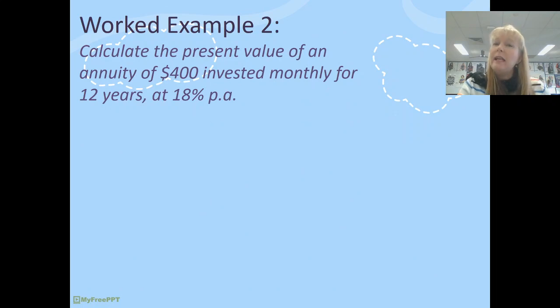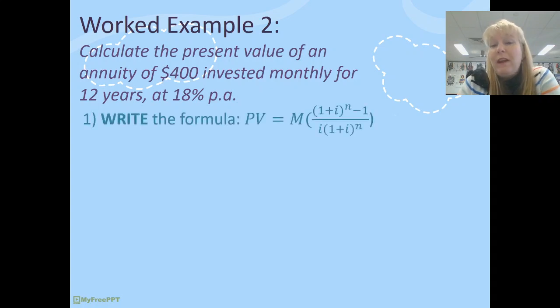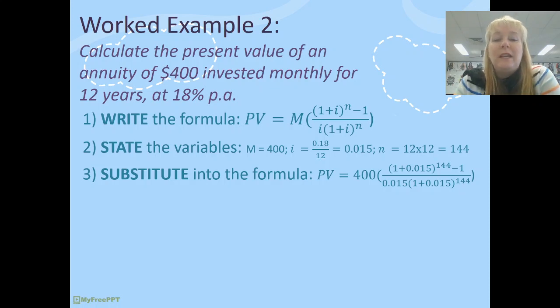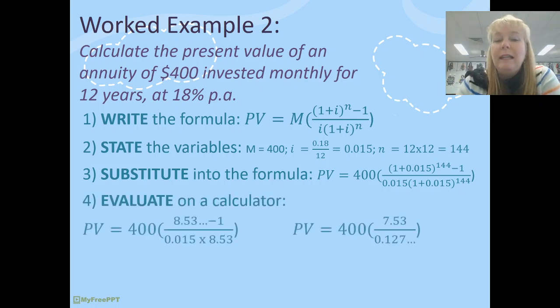Let's look at a slightly more complex question. This one here is a $400 annuity monthly for 12 years, 18% per annum. The main complexity here is that we've now got different variables. We're going to have to transform our interest rate to a monthly rate. We're going to have to transform our power of n to a monthly period as well. So we've got 144 periods. That's some really big powers going on there. So let's substitute that into the formula and work that through on our calculator and doing that in small steps here.